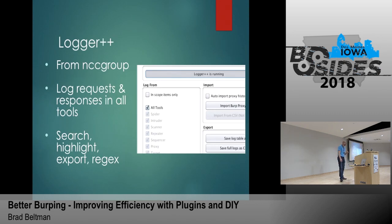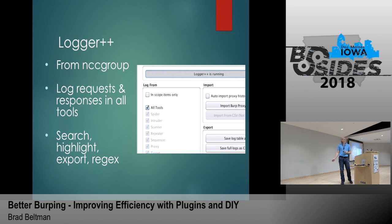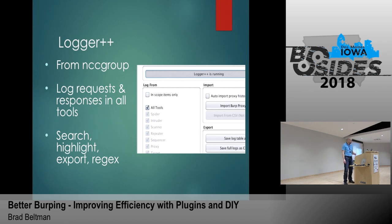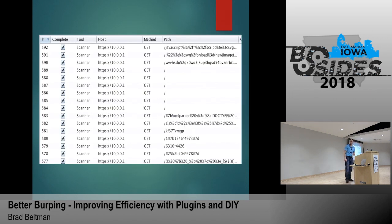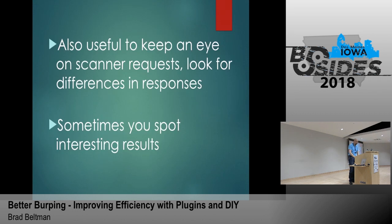The first plugin I want to cover is by far my favorite — it's called Logger++, from NCC Group. It's awesome for troubleshooting macros and things like that. In the configuration you can check which tools you want visibility into. I really like it for scanner and sequencer because you can go back and look. It has searching, highlighting, exporting, regexes, and more. The basic interface shows request numbers, which tool it's in, what you're scanning, method, path — all that.